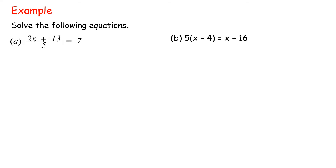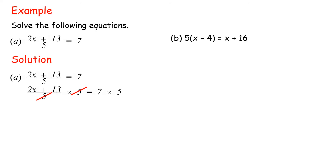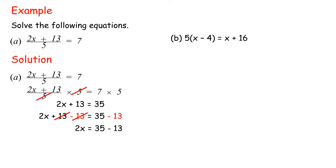Example: solve the following equations. Solution (a) (2x + 13)/5 = 7. Multiply both sides by 5: 2x + 13 = 35. Subtract 13 from both sides: 2x = 35 - 13 = 22. Therefore x = 11.